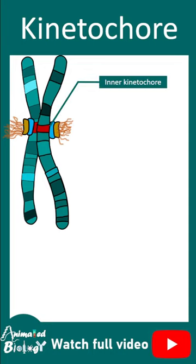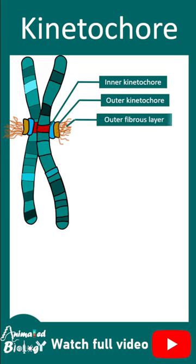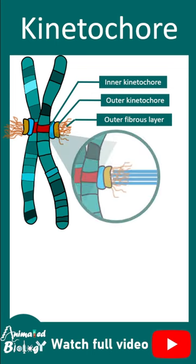There are three zones in kinetochore: the inner kinetochore, the outer kinetochore, and the outer fibrous layer. The fibrous layer is really important for attracting microtubules.